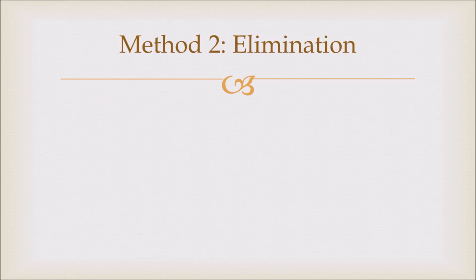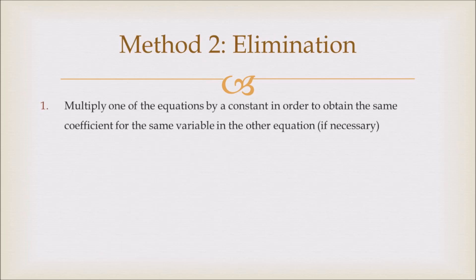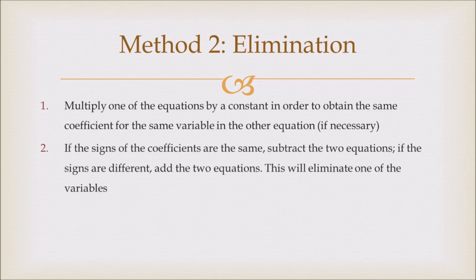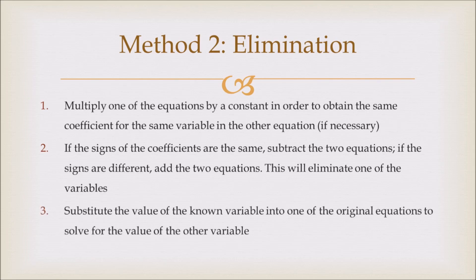So now this is the second method: elimination. The first step is to multiply one of the equations by a constant in order to obtain the same coefficient for the same variable in the other equation, if necessary. Then if the signs of the coefficients are the same, subtract the two equations. If the signs are different, add the two equations. This will eliminate one of the variables. Lastly, substitute the value of the known variable into one of the original equations to solve for the value of the other variable. Now this might sound a little confusing, but once we do an example it will make much more sense.